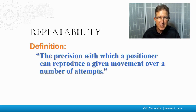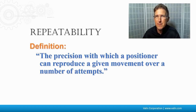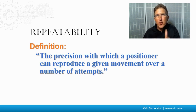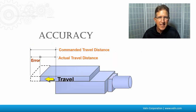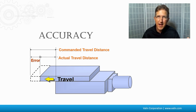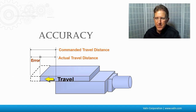Repeatability — the definition — is the precision with which a positioner can reproduce a given movement over a number of attempts. In other words, it's how repeatably you can go to the same location. Accuracy is the difference between where you command the actuator to go versus the actual location it goes to, and there's going to be some error between them.